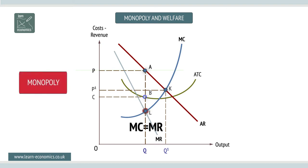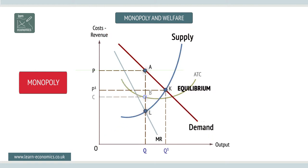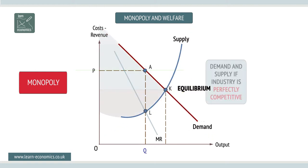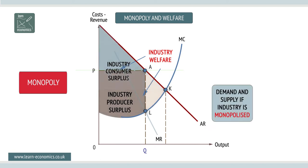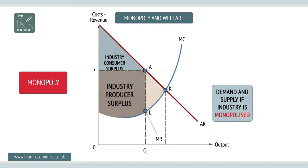Well, if the industry is perfectly competitive, equilibrium would be at point K with welfare at maximum. Welfare is the sum of the industry's consumer and producer surplus, but if monopolized, demand becomes the average revenue curve and supply becomes the marginal cost curve.